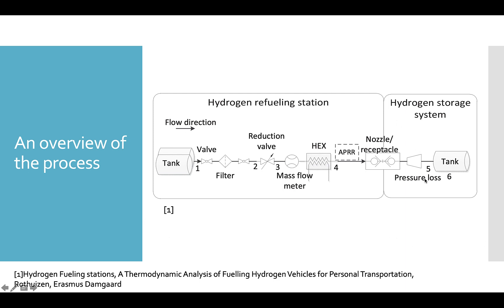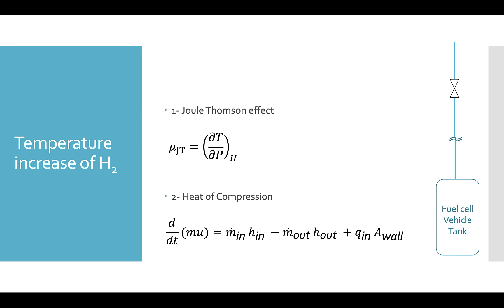In this process there are two points which increase the temperature of the hydrogen. One is in the reduction valve where we reduce the pressure of hydrogen, and the other is in the tank where we're increasing the pressure of the hydrogen. There are two contributing factors to this temperature increase: the Joule-Thomson effect and the heat of compression.